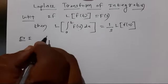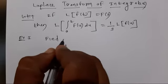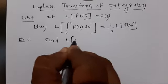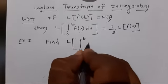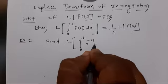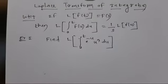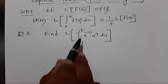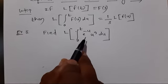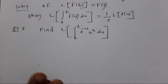Example number one: Find L{∫₀ᵗ e^(-u) · u³ du}. So the question is to find the Laplace transform of the integral from 0 to t of e^(-u) times u cubed du.